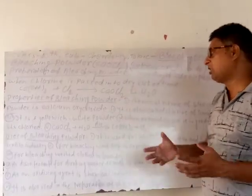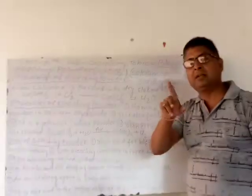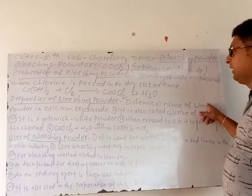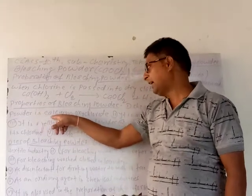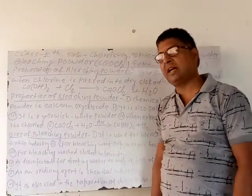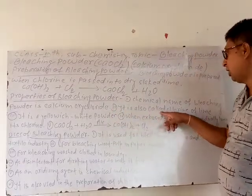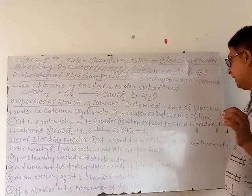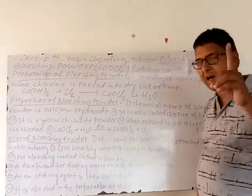Properties of Bleaching Powder — following points: First point: the chemical name of Bleaching Powder is Calcium Oxychloride. Second point: it is also called Chlorine of Lime. Bleaching Powder is referred to as Chlorine of Lime.